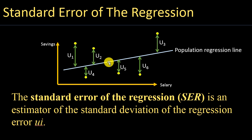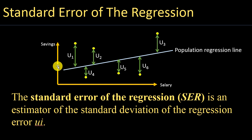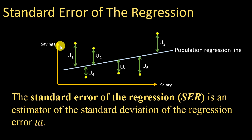The population regression line gives us only an estimate. For example, for someone with a salary at a certain point, the regression line says that individual should have savings somewhere here. But as you can see, that individual's actual savings is quite high compared to what the regression line predicts. The difference between what the regression line says and the actual observation is called the error term, which we indicate using U.